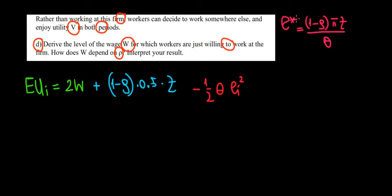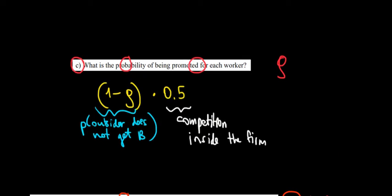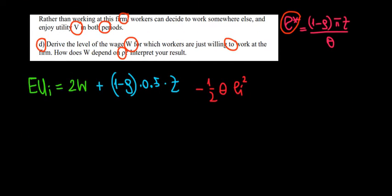Just some highlights here. This is the effort level that each worker is going to put in when he takes into account the outsider. In equilibrium they put in the same effort level, and we found that the probability of getting the bonus is 1 minus rho times 0.5. With all this data in mind we can compute the expected utility. We get a base wage in every period, plus the probability of getting the bonus — which is 1 minus rho times 0.5 — times the bonus, minus the cost of effort.